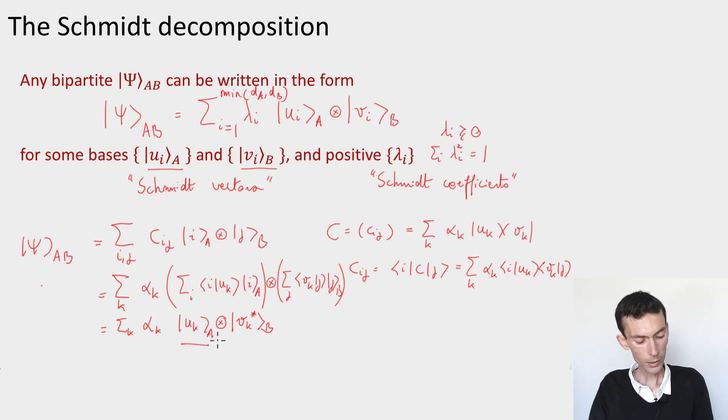This is almost my Schmidt decomposition. I have a basis on the A system, a basis on the B system, a single index k, and some coefficients alpha k.